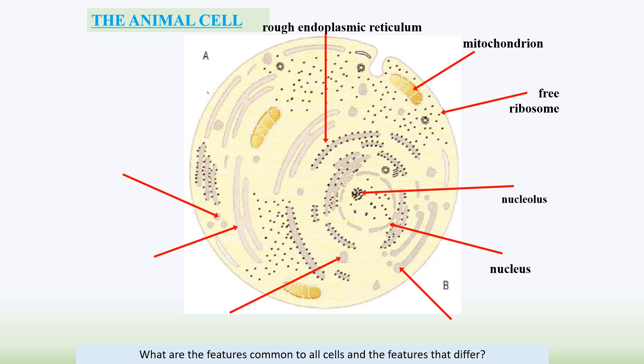The nucleus itself is surrounded by the nuclear envelope, which has holes in it to allow messenger RNA to leave, but it contains the DNA within the cell, separating it from the rest of the cell. The Golgi apparatus packages and modifies both proteins and lipids, and adds carbohydrates to proteins to make glycoproteins or glycolipids.